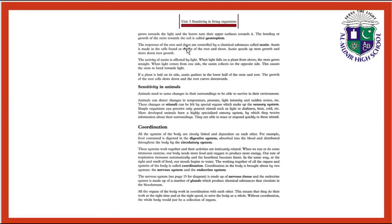The response of the root and shoot are controlled by a chemical substance called auxin. Auxin is made in the cells and is found at the tip of the root and shoot. Auxin speeds up stem growth and slows down root growth.